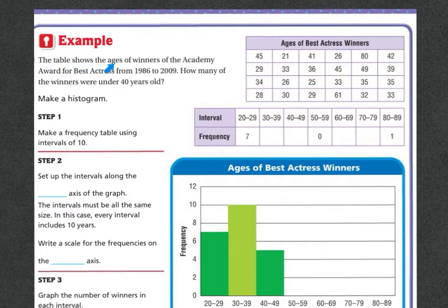Example. The table shows the ages of winners of the Academy Award for Best Actress from 1986 to 2009. How many of the winners were under 40 years old? So here's our Best Actresses, and we need to find out how many were under 40 years old. So let's make a histogram.